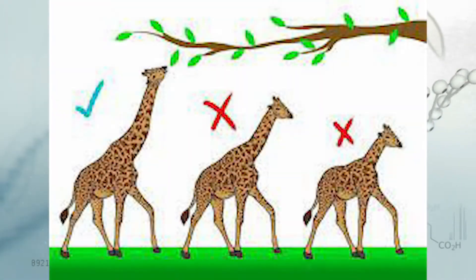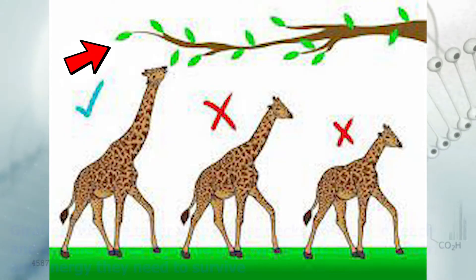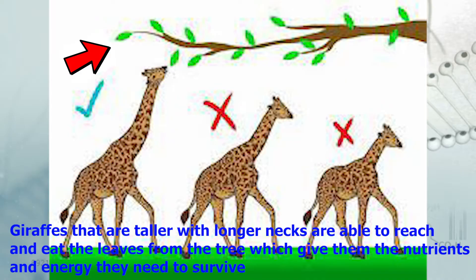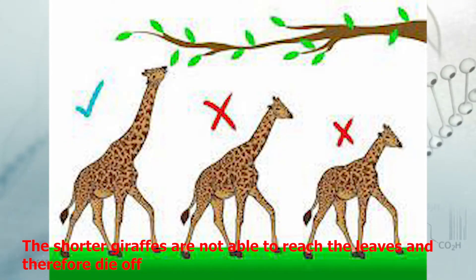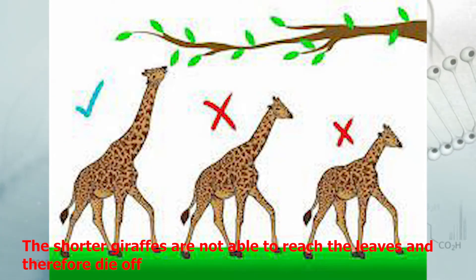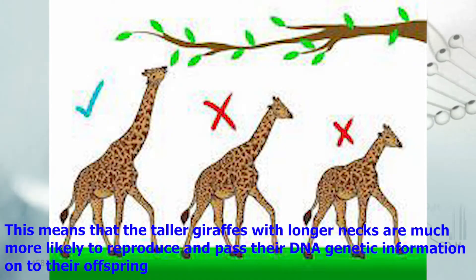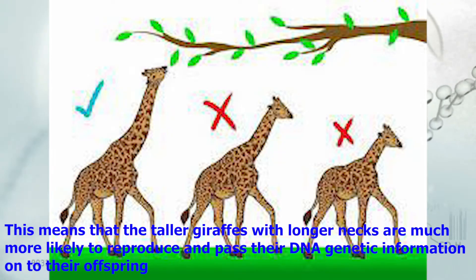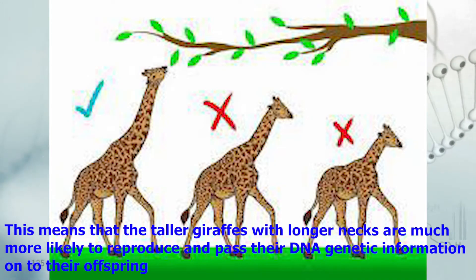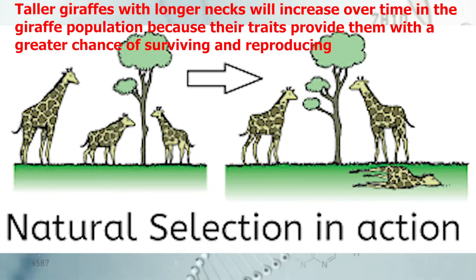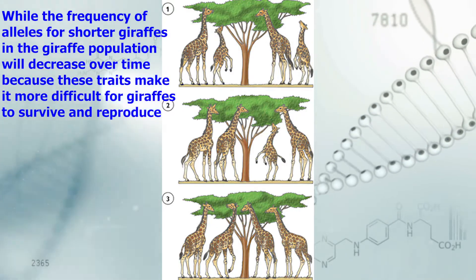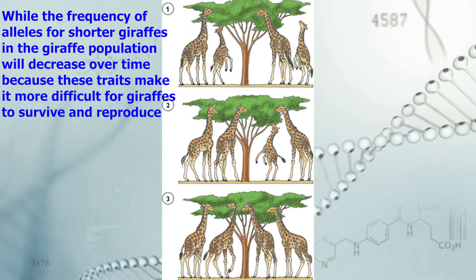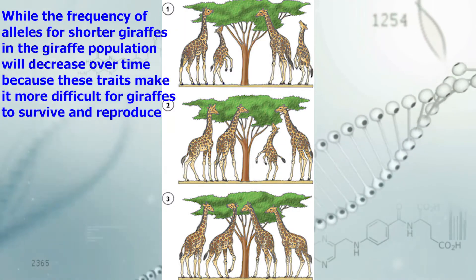Let's analyze the following picture with giraffes. If you notice, the leaves are high up in the tree. Giraffes that are taller and have longer necks are able to reach and eat the leaves from the tree, which gives them the nutrients and energy they need to survive. The shorter giraffes are not able to reach the leaves and therefore die off. This means that the taller giraffes with longer necks are much more likely to reproduce and pass their DNA and genetic information onto their offspring.